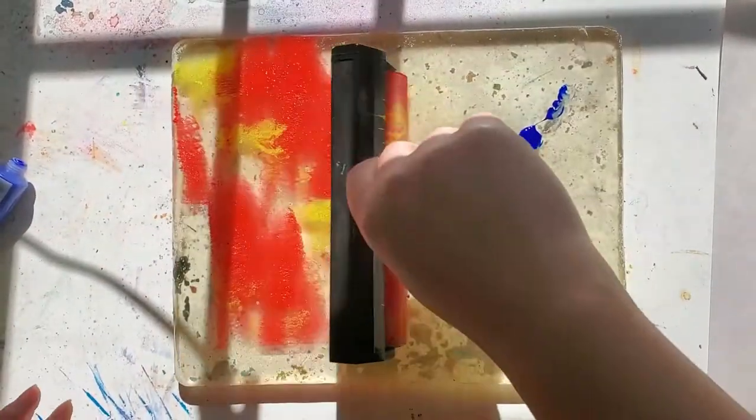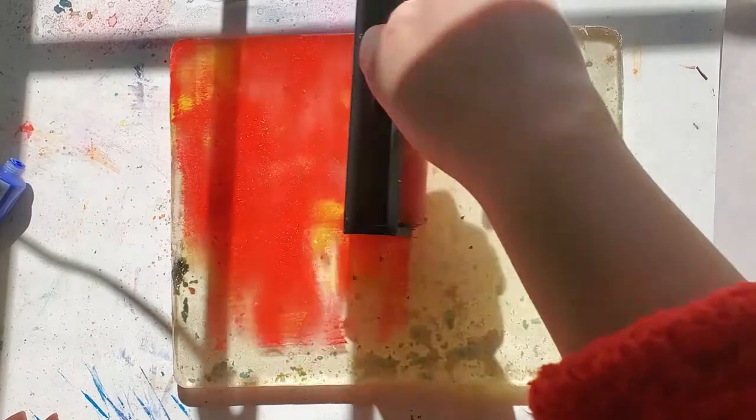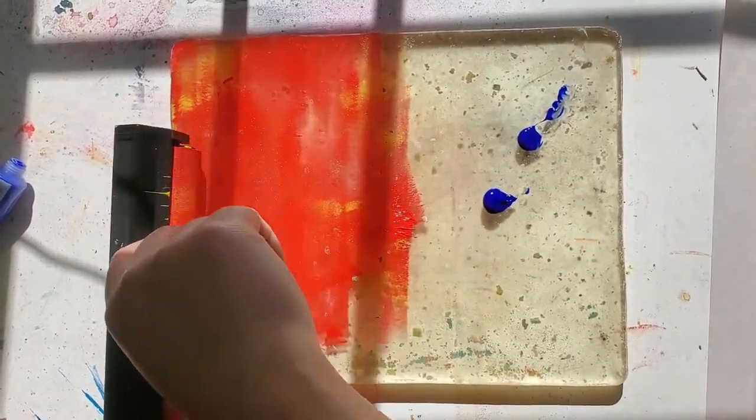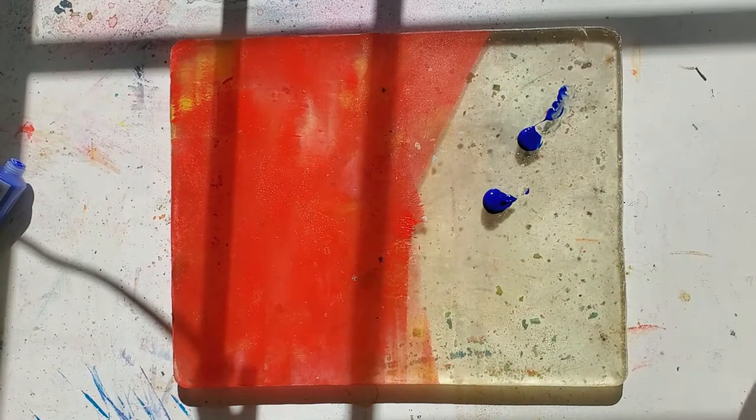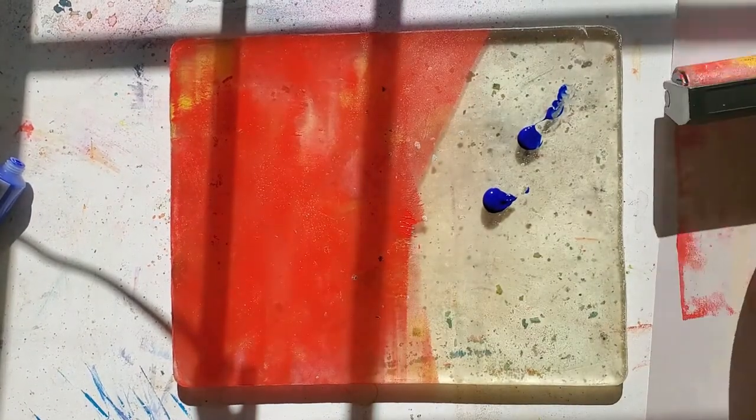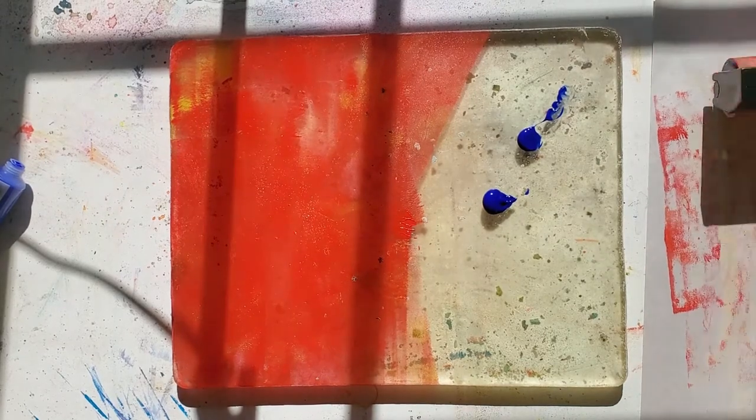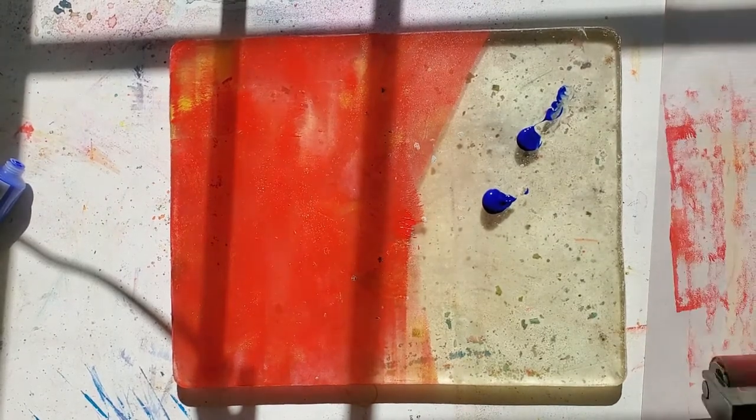So this is going to be a primary color print, and we will have a piece of paper next to us to get rid of the colors that's on the brayers. It doesn't get too muddy. And I like to save those colors as well.